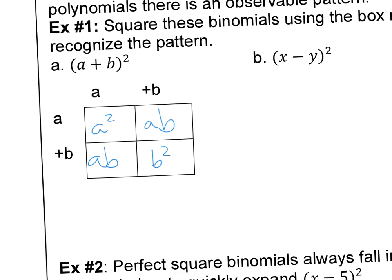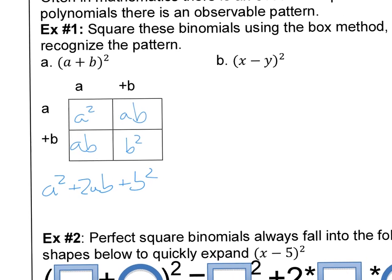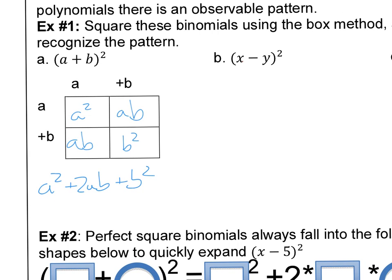So when we add this all up, we have a squared, two ab's, and then b squared. We can kind of see what's happening here. I want you to try and do this one as I do it with you.